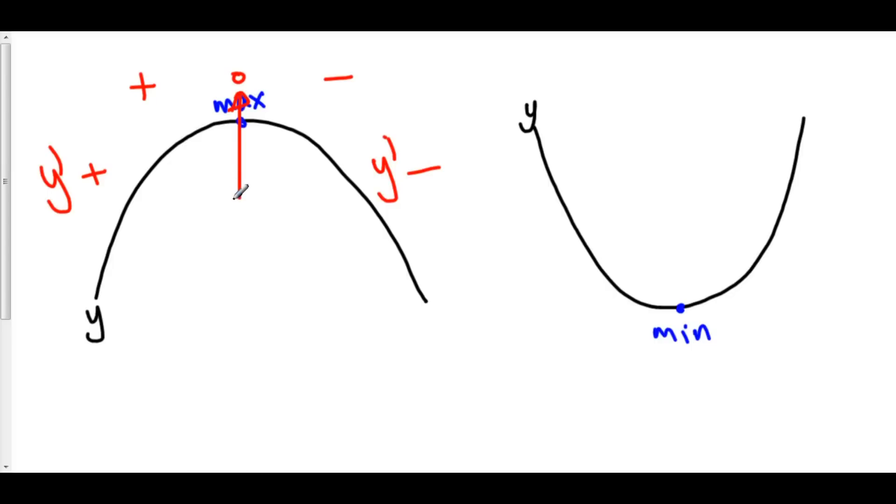So, we have a relative maximum when the derivative changes from positive to negative. If you ever forget, just make a hill with your fingers and then you'll see where that max lies. Positive to negative.